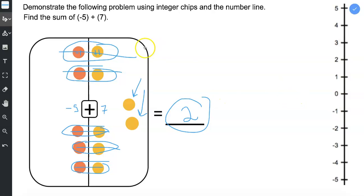Also, I'm going to model this on the vertical number line. My starting value is at negative five. And then plus a positive seven.